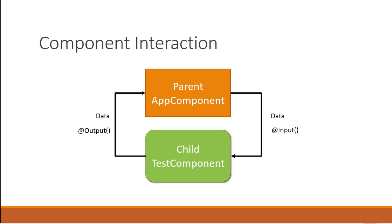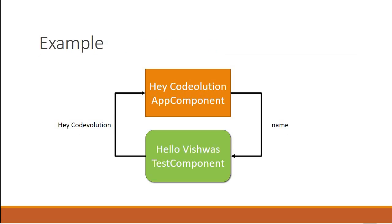For our example, we will send a name from the app component to the test component, and in the test component we're going to display 'hello' followed by the name — for example, 'hello Vishwas'. Similarly, we'll send a message 'hey code evolution' from the test component to the app component and display that message in the app component template. First let's look at sending data from the parent to the child.